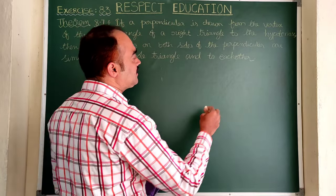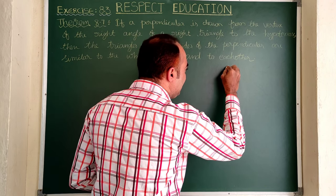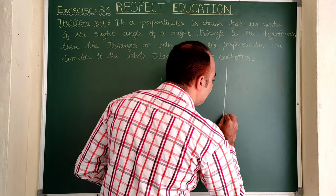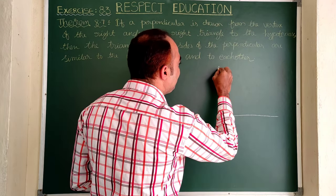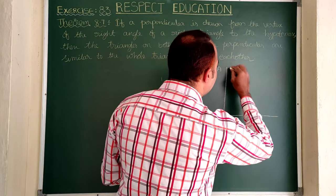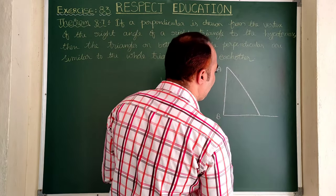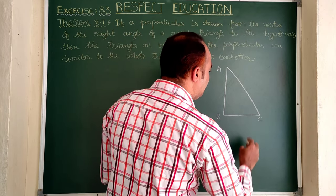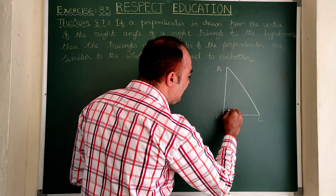Let us understand the question. There is a right-angled triangle. For example, let us take triangle ABC as a right-angled triangle. Consider triangle ABC, right-angled at B.